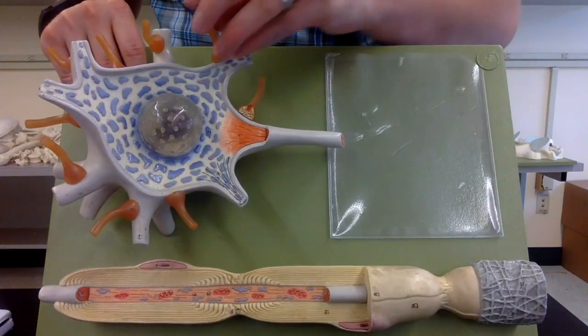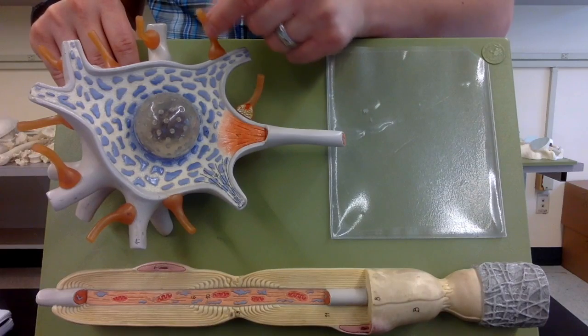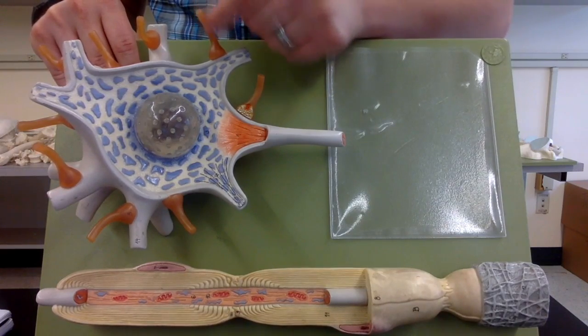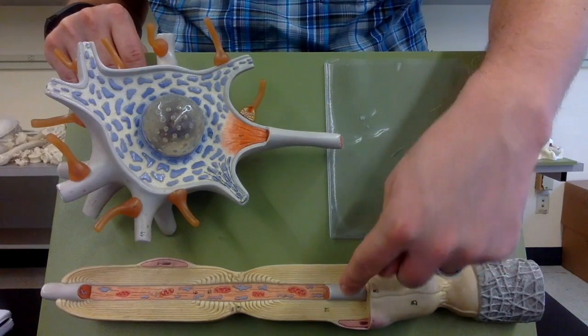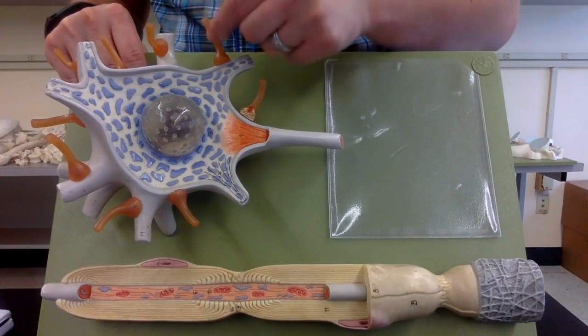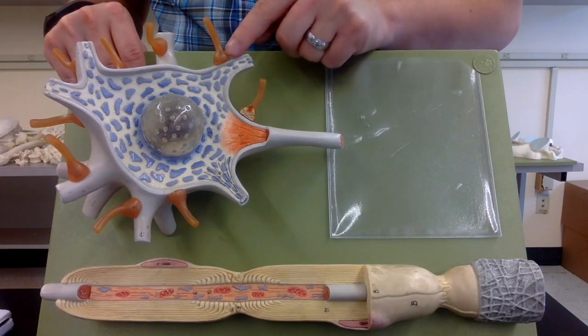So what are these orange things coming from the previous neuron? Right here is the teledendria or terminal branches. So that's where on the previous neuron its axon started to fray at the end into these pieces called terminal branches or teledendria.